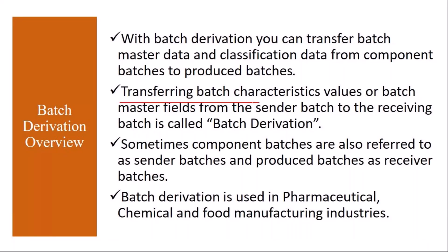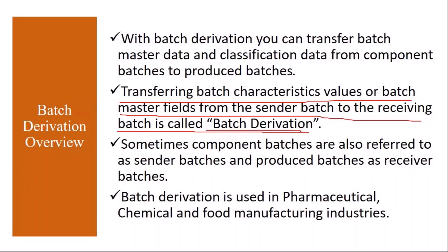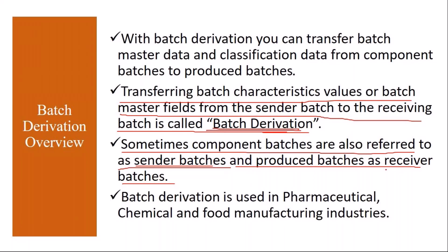Transferring batch characteristic values or batch master fields from the sender batch to the receiving batch is called batch derivation. Basically you can transfer batch data like manufacturing date, expiry date, GR date, or even batch characteristic values. Component batches are also referred to as sender batches and produced batches as receiver batches. This batch derivation is normally used in the pharmaceuticals, chemical, and food manufacturing industry.